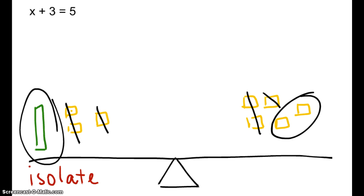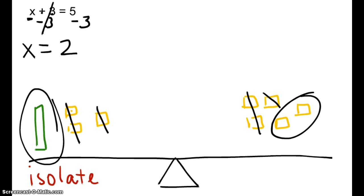So let's write out what we actually did. Here's our variable — the variable is on the left. First, identify what side the variable is on. Instead of 3 positives, we want to subtract 3 from the left and subtract 3 from the right. So we created x by itself on the left — we just have x. And 5 take away 3 is 2, so x has a value of 2.